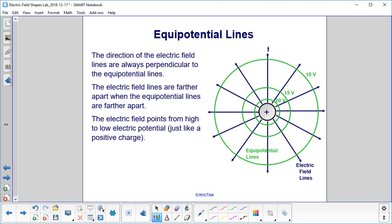Let's now overlay the electric field lines. The direction of the electric field lines are always perpendicular to the equipotential lines. So our green lines here, the circles, are the electric potential lines.